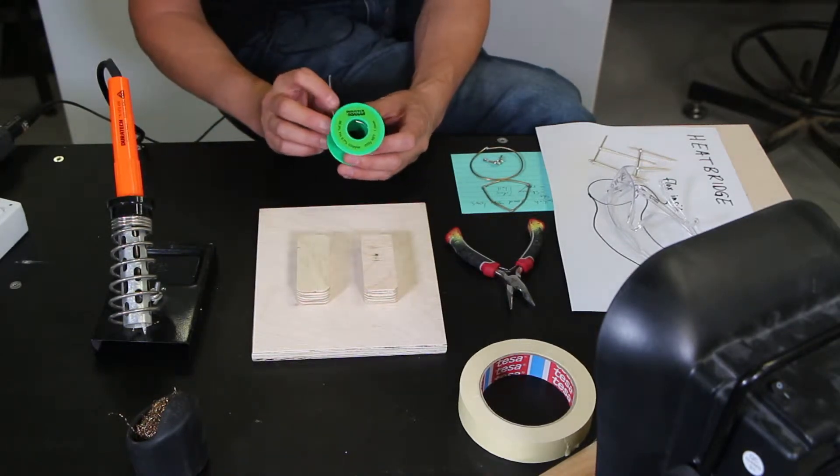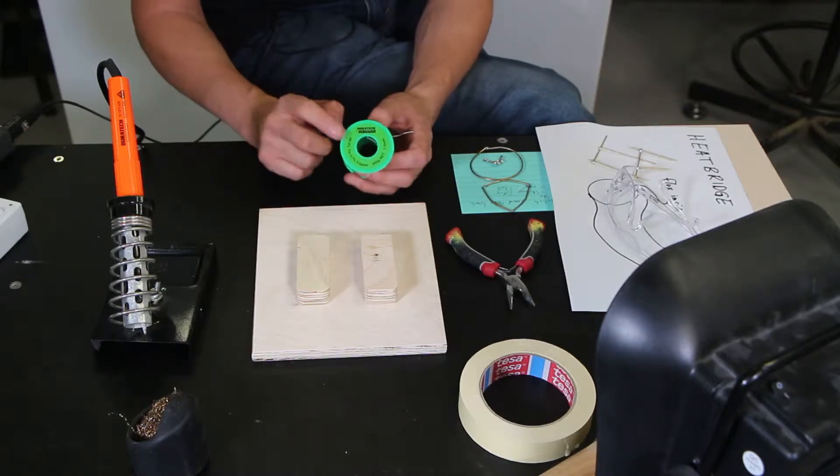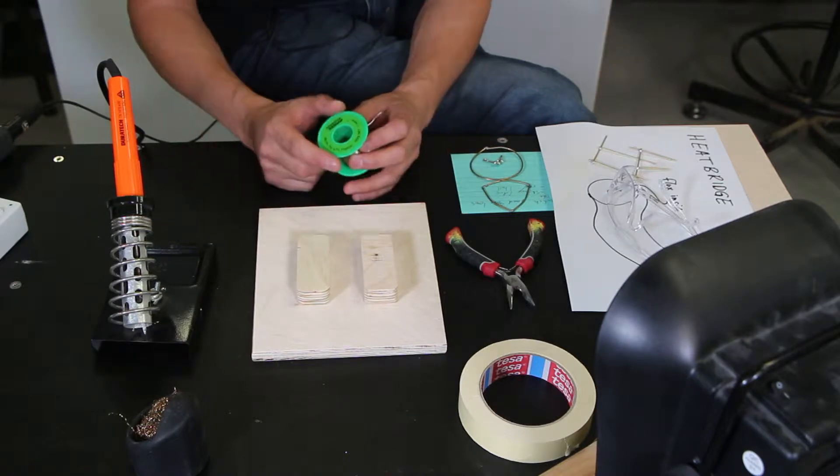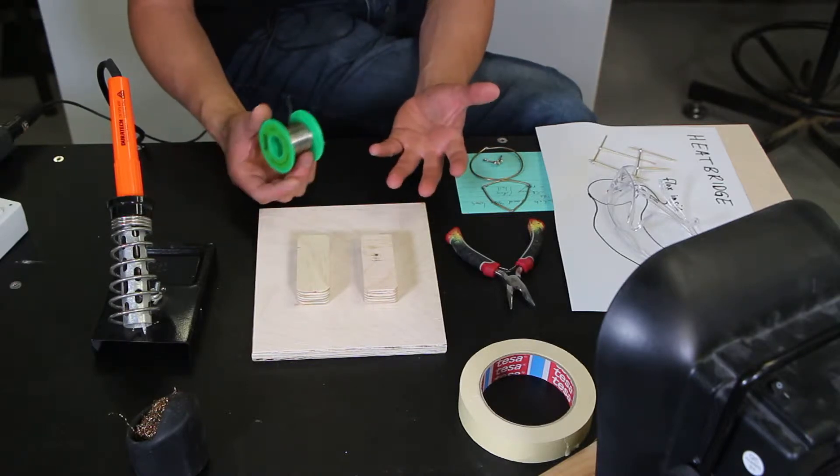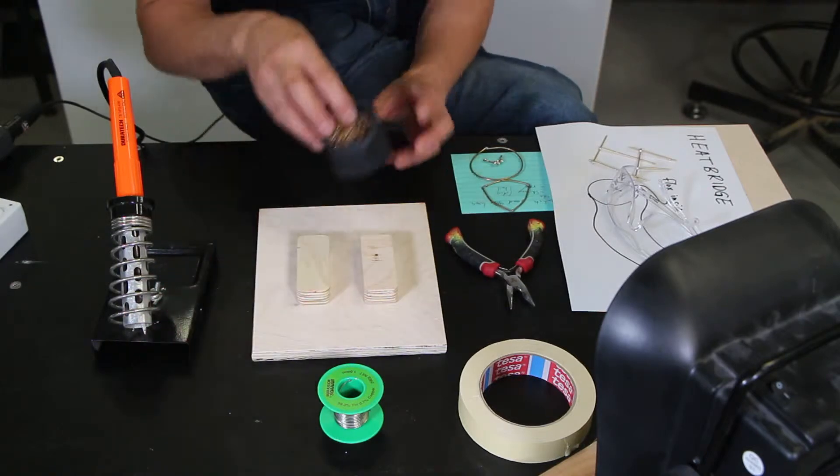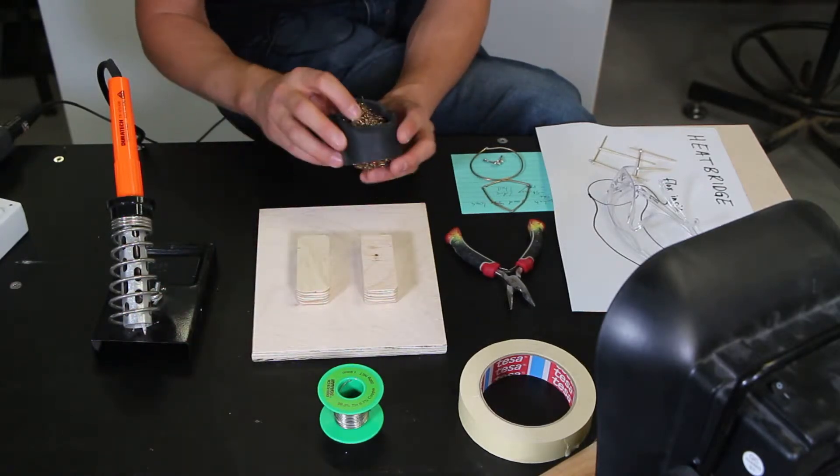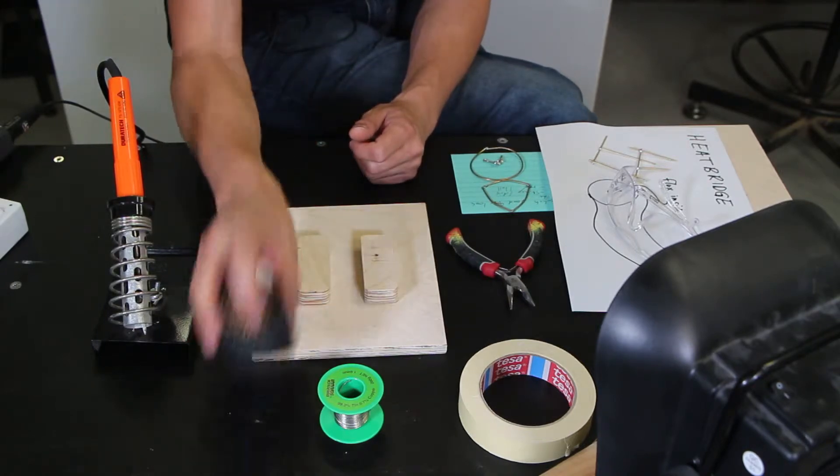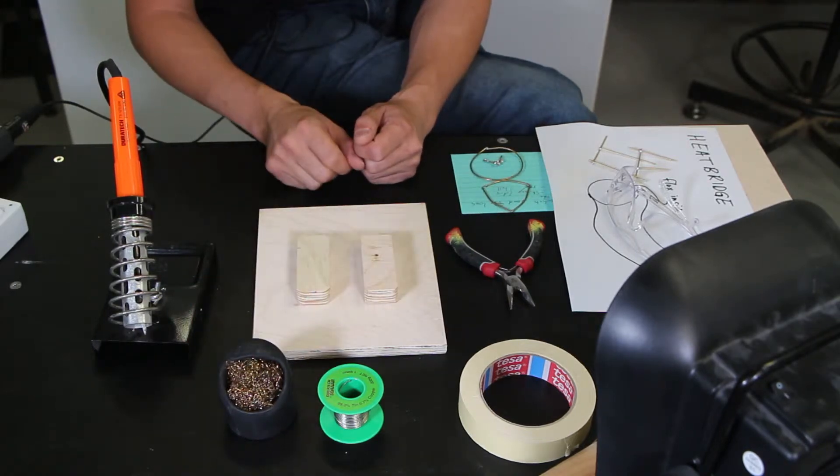If you buy some solder from a variety store or wherever, you may be getting some lead in your solder. Just make sure you wash your hands if you are buying that type of lead solder so you don't ingest it and end up poisoning yourself. This is what we're going to condition our tip with: some steel wool.